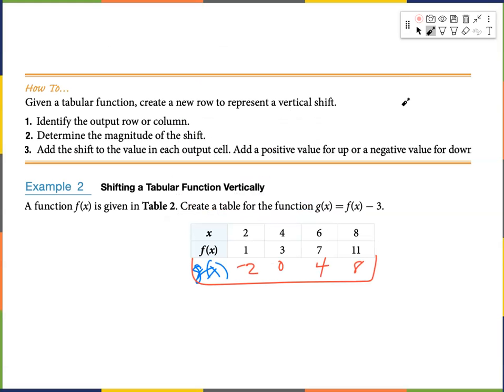Next, shifting a tabular function vertically. Given f of x with x values 2, 4, 6, 8 and f of x values 1, 3, 7, 11, we create g of x equals f of x minus 3. We subtract 3 from each output: 1 minus 3 is negative 2, 3 minus 3 is 0, 7 minus 3 is 4, and 11 minus 3 is 8.